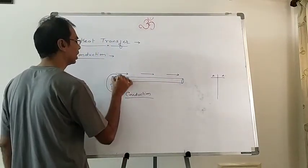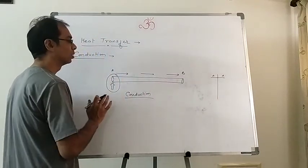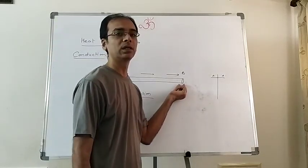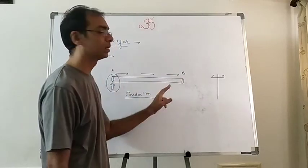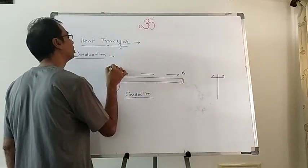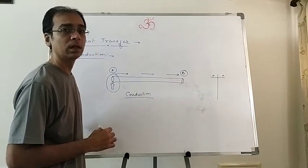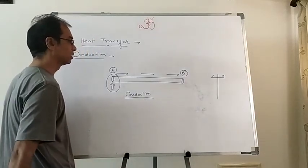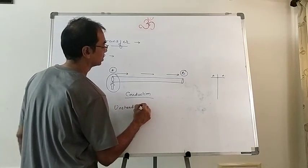Now, what is happening at end A and end B when you continuously heat it? The temperature and kinetic energy of the particles at end A keeps increasing, and at end B it also keeps increasing because heat is coming from A. This state — in which energy is being passed and the temperature of every section A as well as B is changing — is called the unsteady state or transient state.